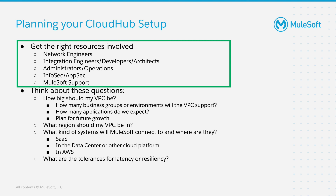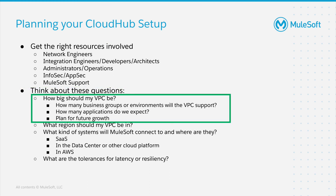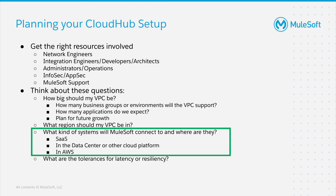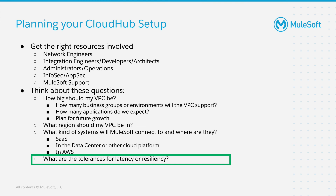MuleSoft support will initiate the connection from the CloudHub VPC to your AWS VPC for VPC peering, and will also accept the virtual interface request from your instance for Direct Connect. You'll also want to think about these questions: How big should my VPC be? How many business groups or environments will have VPC support? How many applications do we expect, and what is our plan for future growth? You'll also want to answer what region should my VPC be deployed in, and what kind of systems will MuleSoft connect to and where are they? If they're SaaS systems, there may not be any special connectivity requirement. If they're in the data center or another cloud platform, you may want to look into IPsec VPN tunneling. If they're in AWS, you may want to consider VPC peering. Lastly, you'll also want to consider your tolerances for latency or resiliency of the connection between CloudHub and other resources running in your data center or cloud infrastructure.